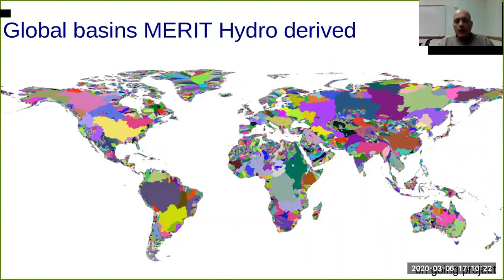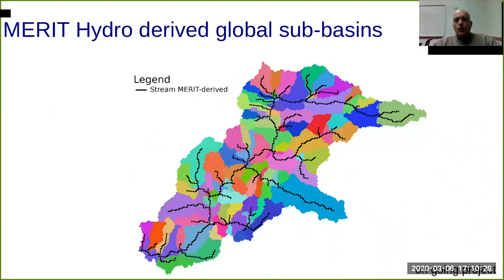This has been done in the supercomputer at Yale, and if you are able to zoom inside each single catchment, you can see the sub-catchment of each single stream and sub-stream. You can identify that each single sub-catchment can be a unit for different kinds of applications — soil erosion, species distribution, or other elements.